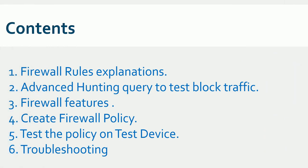Here is the content we're going to cover in this video: first, firewall rule explanation — I'm going to explain everything about the firewall. Then we'll talk about the advanced hunting query used to track your traffic, whether it's getting blocked or not, and what type of traffic is getting blocked. Then we'll create a firewall policy, test it on our test device, and finally cover troubleshooting.